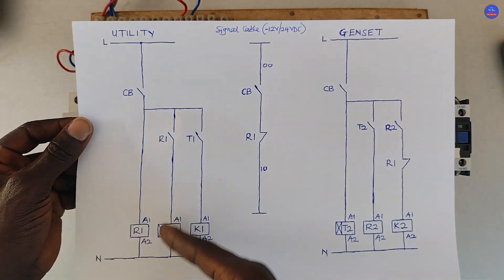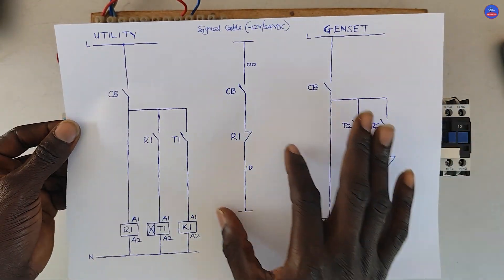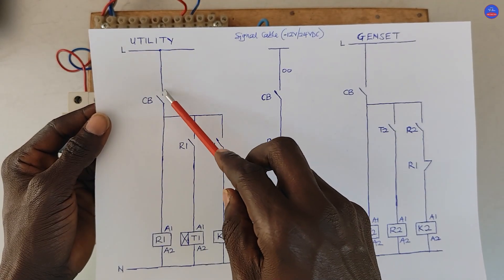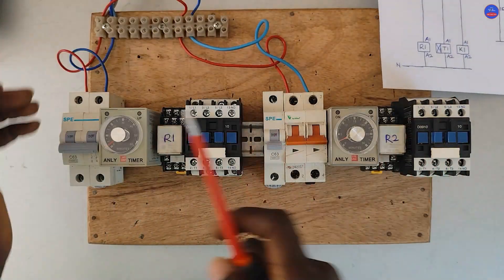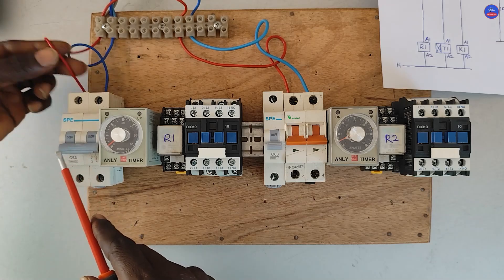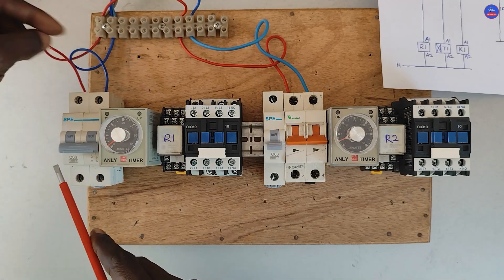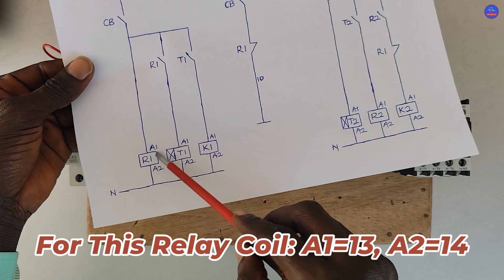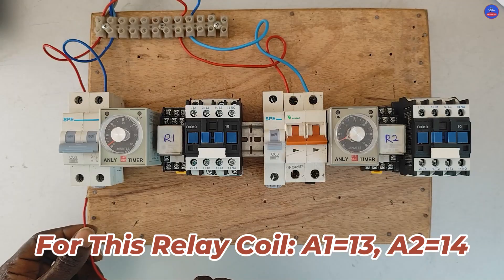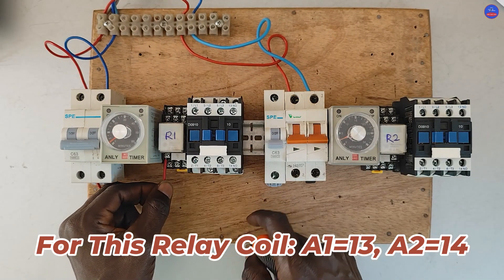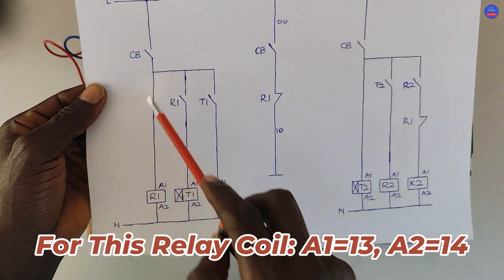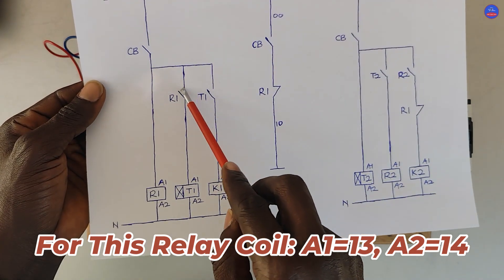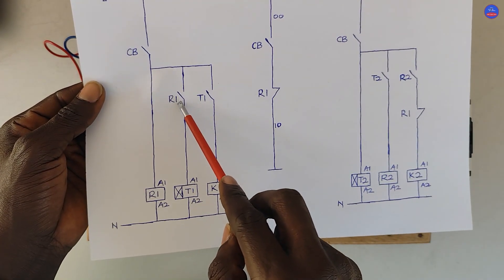This is the utility line and then this is the genset line. We tap from the live line to one side of the breaker. This is the breaker — this is the live, this is neutral. From the output of the breaker, it goes to A1 on the relay. We can tap from the output of the breaker or from A1 on the relay to one side of the open contact on the relay.